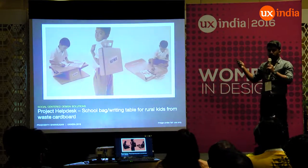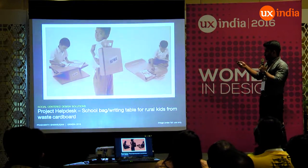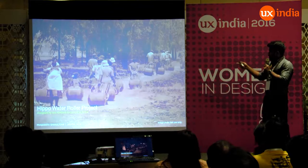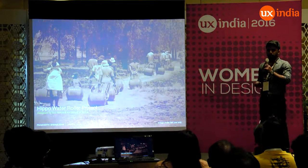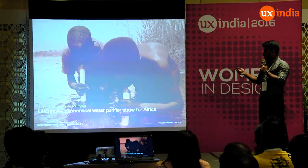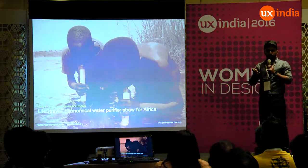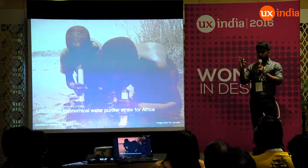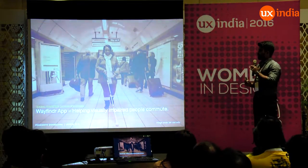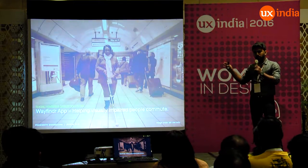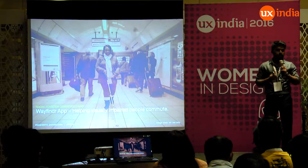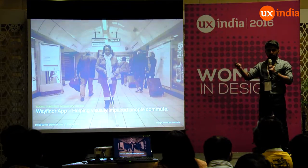This one is called Project HipDisk — a multi-utility cardboard project done for school kids. It can be used as a writing table and a backpack. This is the HIPPO Water Roller Project for people in Africa, done by an NGO for transporting water from distant sources. This is called LifeStraw — an electronic water filter where you suck water from any source and it is automatically purified. It's focused on a specific set of people facing those problems. And this is the Wayfinder app for visually impaired people in spaces like train stations, shopping malls, or theatres — it tells you how many steps to take to reach a counter.